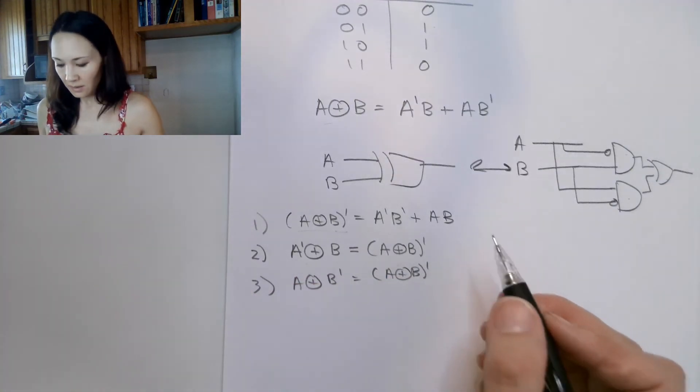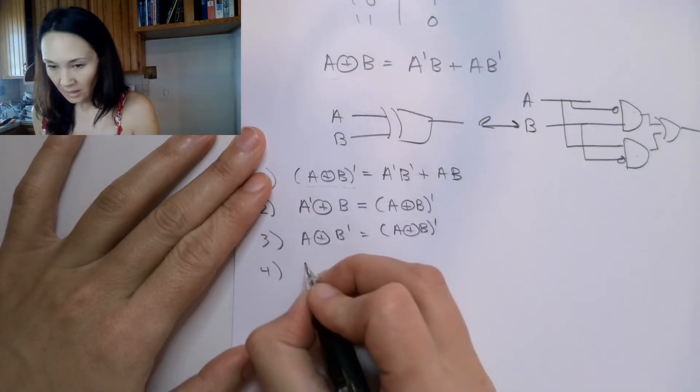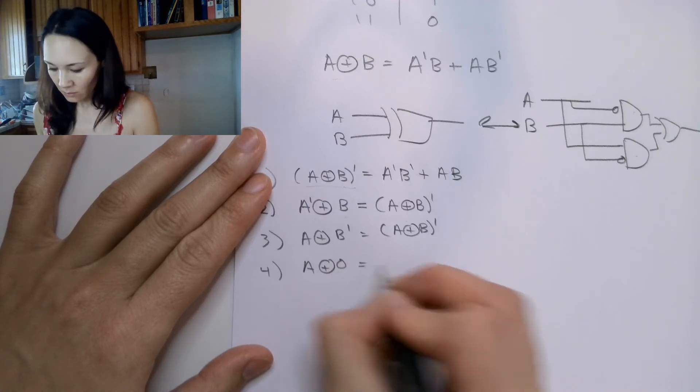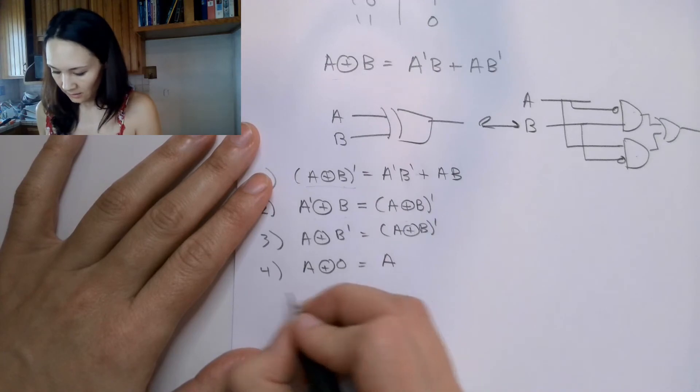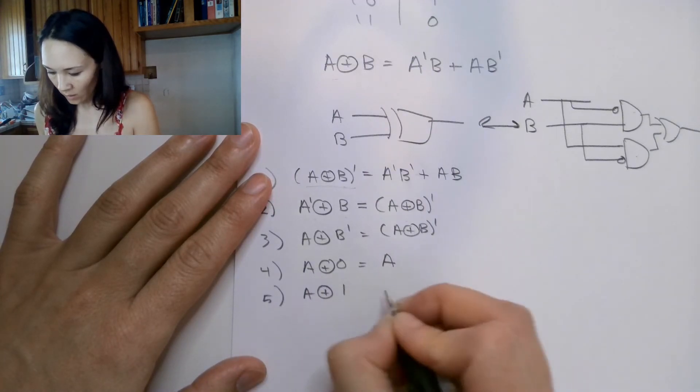Okay, great. The other one we have is that if we XOR A with 0, we get A. And if we XOR anything with 1, we get A complemented.